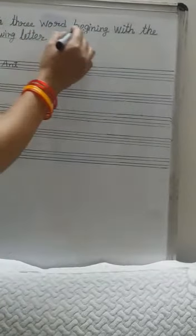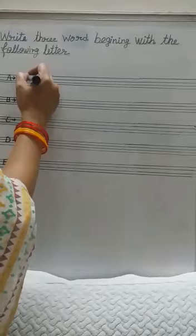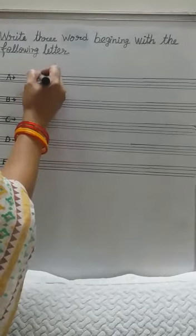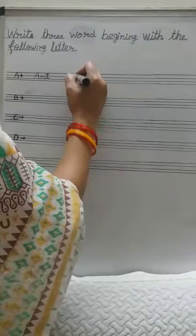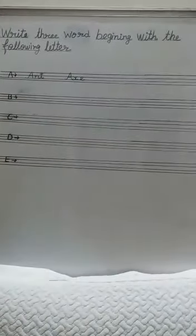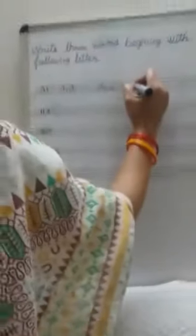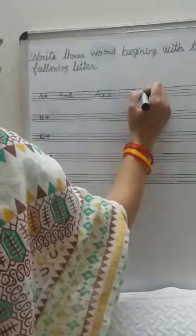Write three words beginning with the following letter. A for Aunt. A-N-T, Ant means GT. A-X-E, Axe means Kulhari. A-P-P-L-E, Apple. Apple means same.